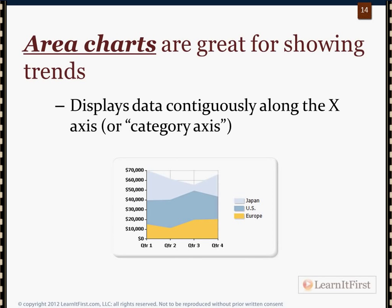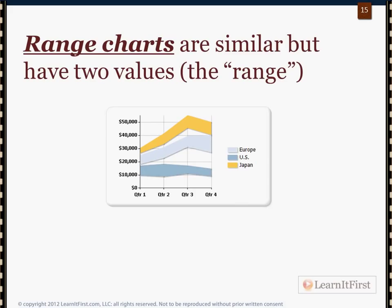Area charts are good for also showing trends. We can visually compare Japan, U.S., and Europe — it's almost like a cross between the bar chart and the line chart. And a range chart is very similar, except we have two values — a minimum and a maximum — so we're plotting a range. It's just the number of data points that we're plotting.